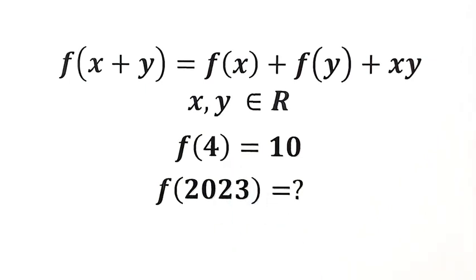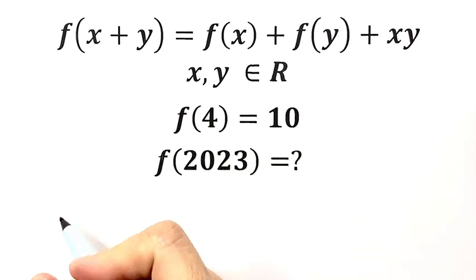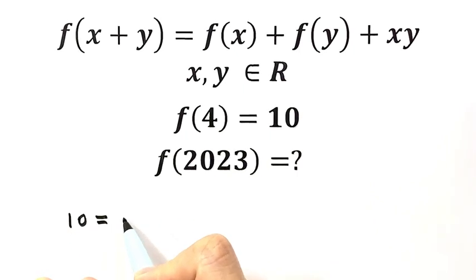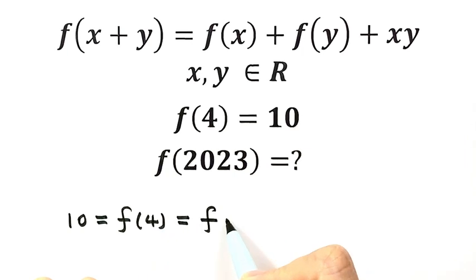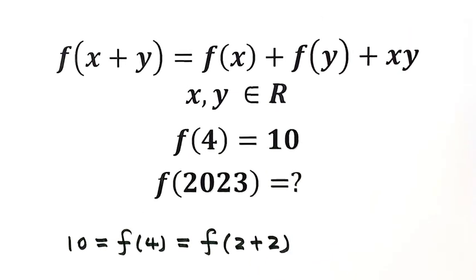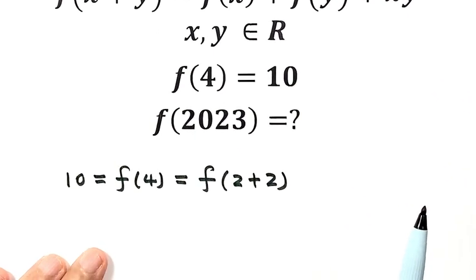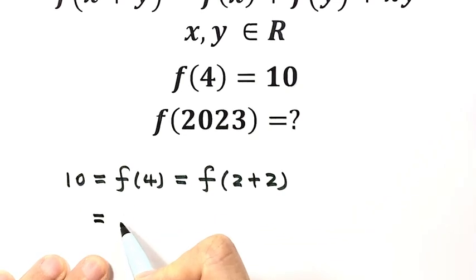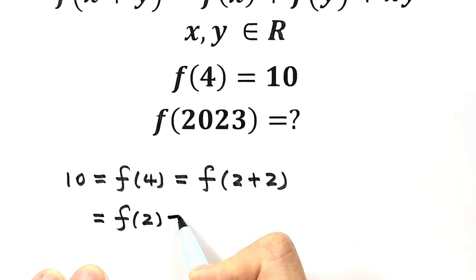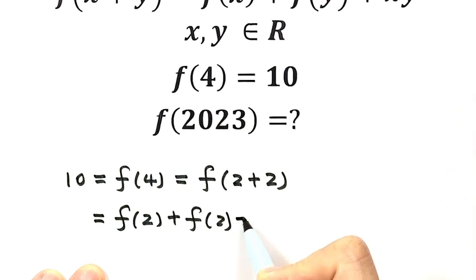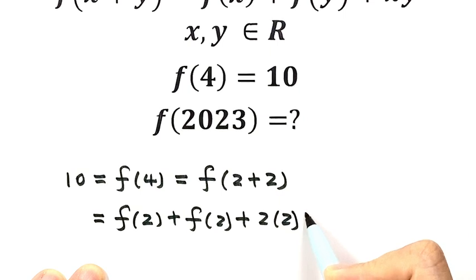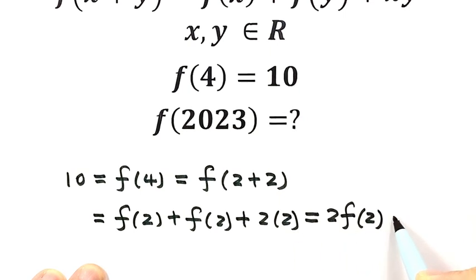We're going to start with the second given condition, that is f(4) = 10. For f(4), we can write it as f(2+2). Using the first given condition, f(2+2) = f(2) + f(2) + 2×2, which simplifies to 2f(2) + 4.